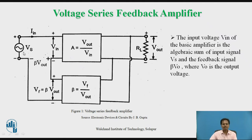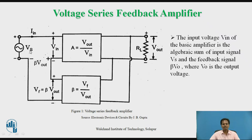For the voltage series feedback amplifier, the effective input voltage for the basic amplifier is VN, and VS stands for the external applied input signal voltage. The feedback circuit samples part of the output voltage using a parallel connection at the output side. The signal proportional to output voltage, designated as VF, is fed back to the input side and applied in series with the input signal. VN stands for the effective input voltage of the amplifier, coming in series with the external applied input voltage VS.